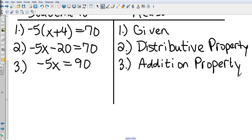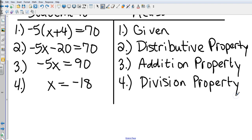Finally, I'm going to divide both sides by negative 5, so that's going to give me x equals negative 18. That was our division property. Nothing new, stuff that we've done before. It's just now we are proving each step. Let's take a look at one more.